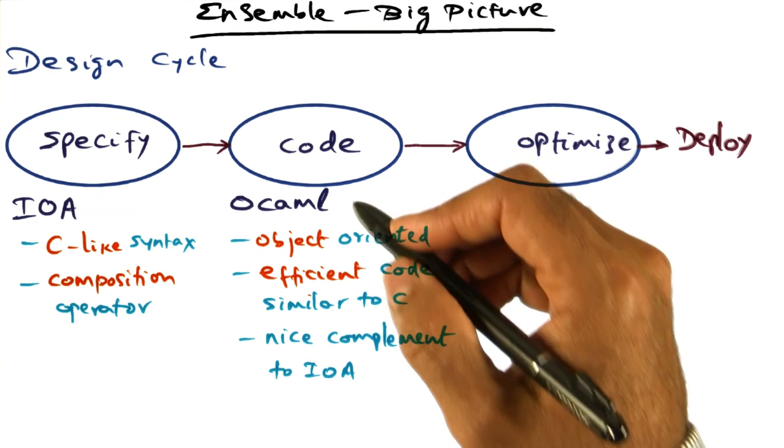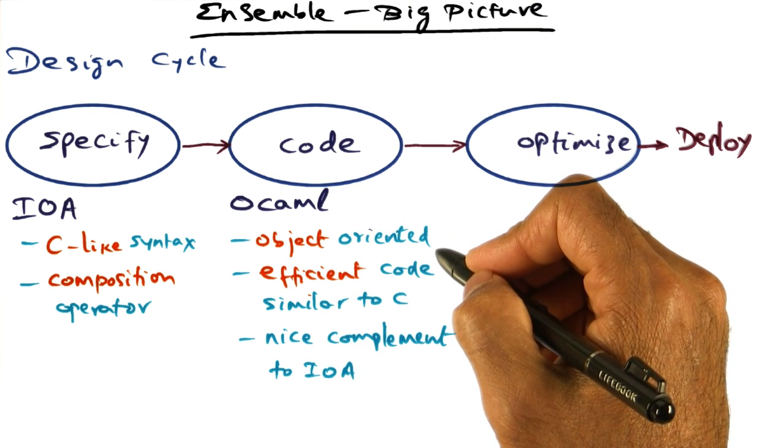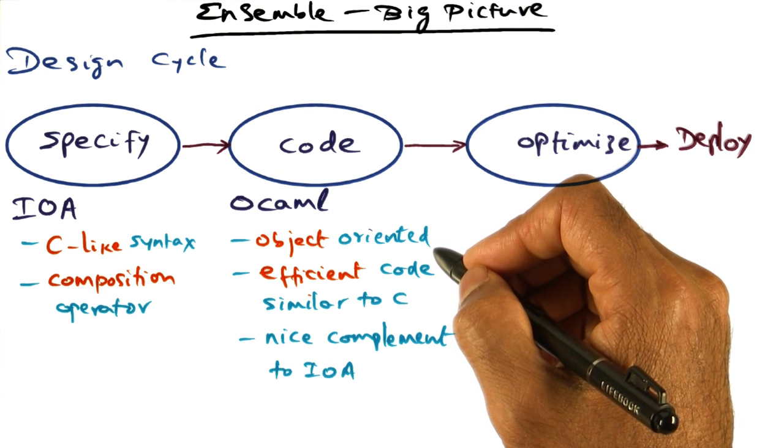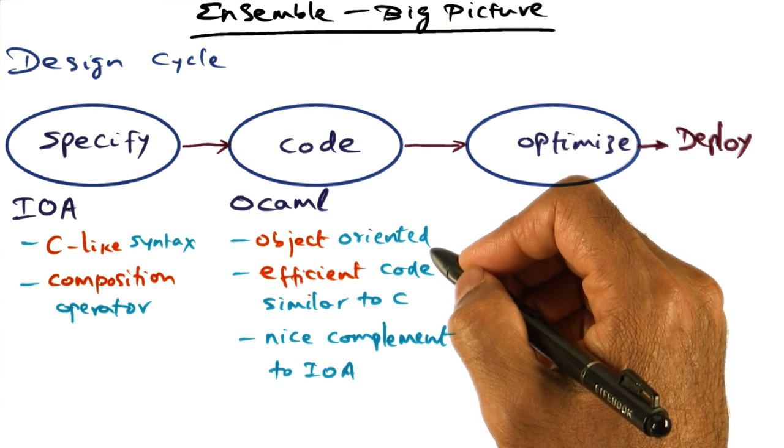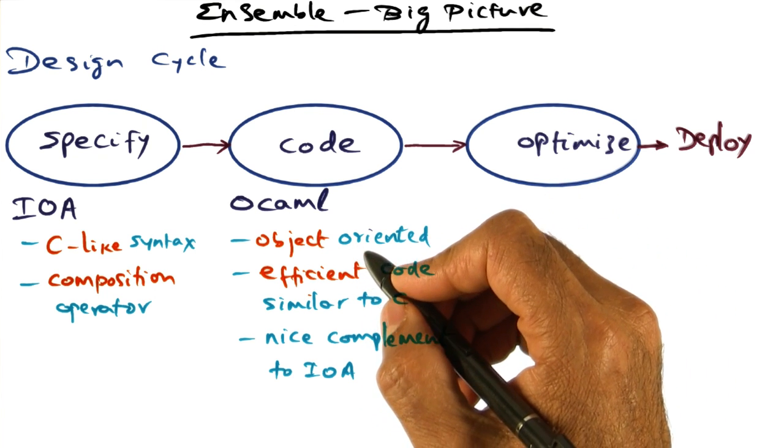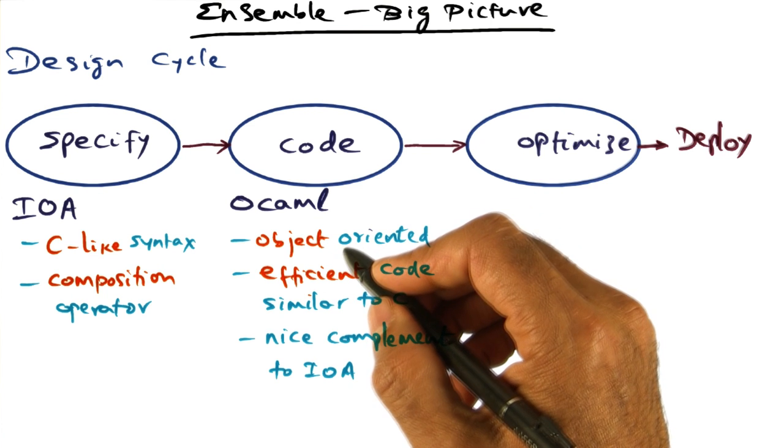The second nice property that it has is it's object-oriented. Being an object-oriented language, it has some very nice properties such as no side effects for things that you do in the program. And in fact,